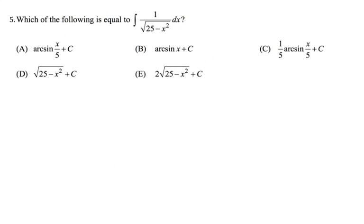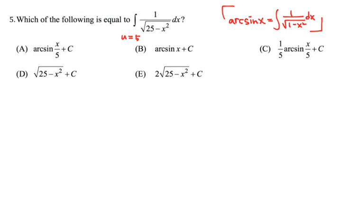Let us move on to number 5: which of the following is equal to this? If you remember, this resembles the derivative of arc sine — arc sine of x equals the integral of 1 over radical 1 minus x squared dx. In place of 1, we have 25, which doesn't fit directly. So we can use u-substitution. If we set x as 5u, then dx equals 5 du.